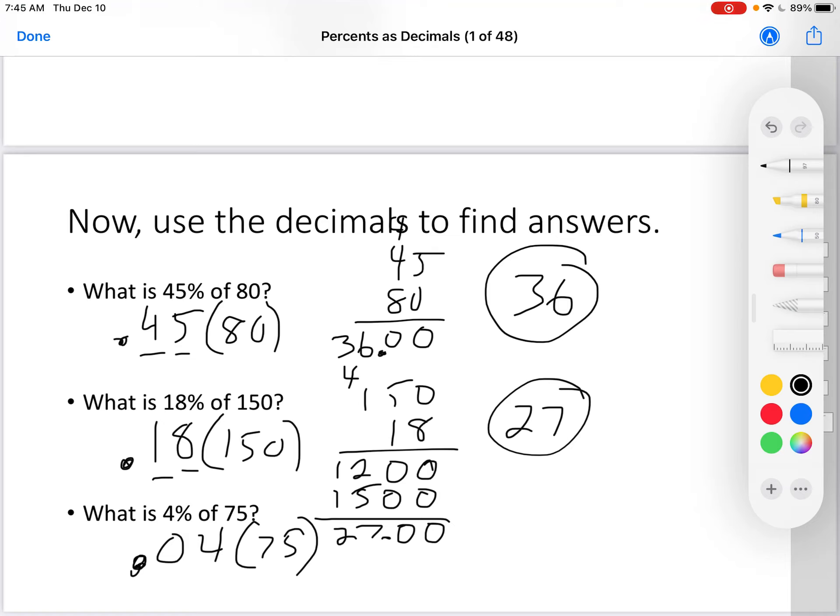Now I have to do 75 times 4. Remember, it doesn't matter what order you put them in. I like to put the one with more digits at the top. 4 times 5 is 20. Put the 0, carry the 2. 4 times 7 is 28, plus 2 makes 30. But remember, there are two decimal places, 0.04, so I put two decimal places in the answer, and in the end, the answer is 3.